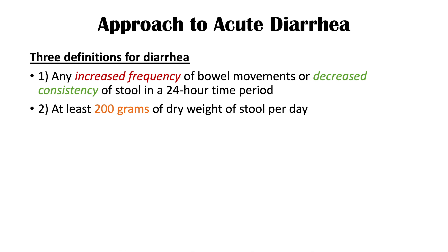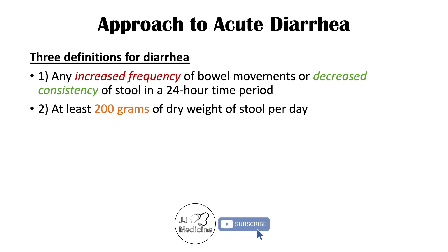The second definition is a bit more precise: diarrhea is at least 200 grams of dry weight of stool per day. This can be difficult to quantify, since most people aren't going to weigh their dry stool per day, making this a difficult definition to use in practice.